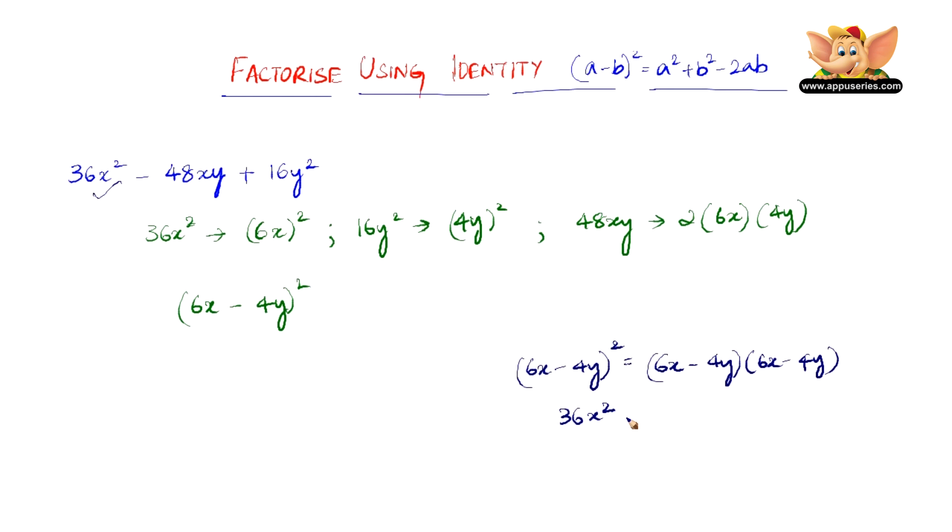6x into minus 4y is minus 24xy well not yet there. Let us take another term minus 4y into 6x is minus 24xy again.